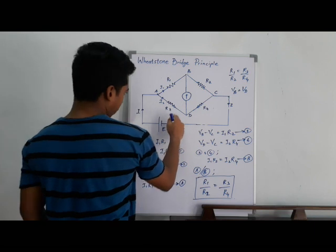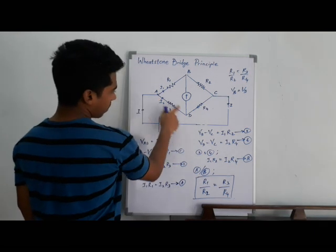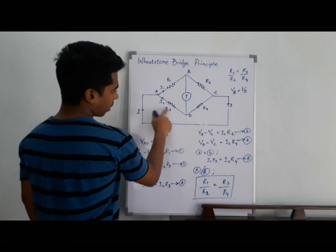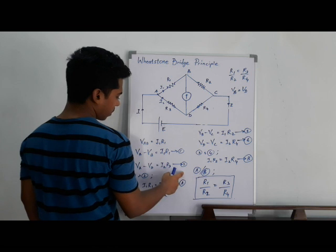Similarly, we can consider the potential difference across R3 resistors. So I can write VA minus VD is equal current times resistance I2, I2 times R3. So that's my equation 2.